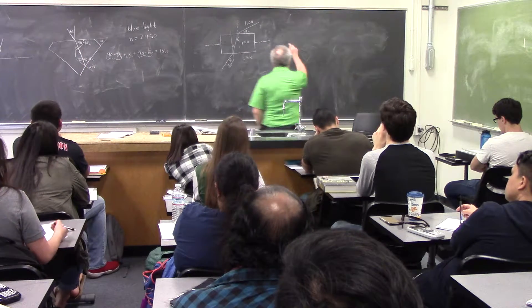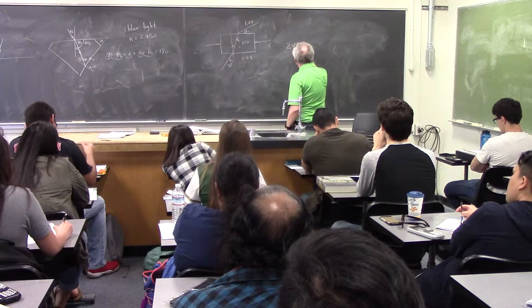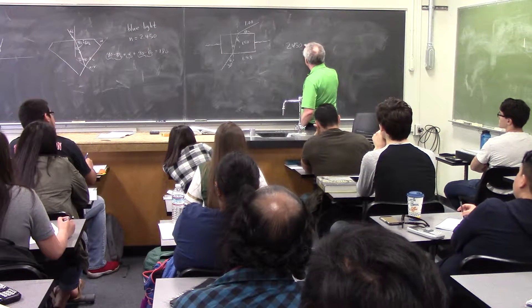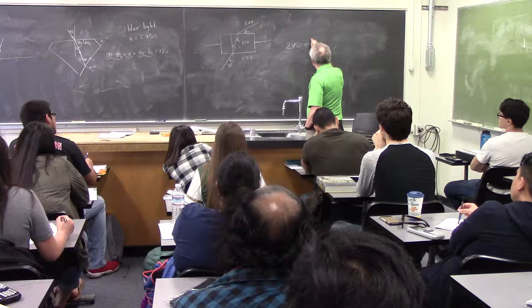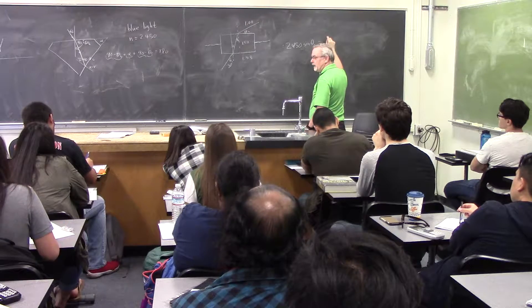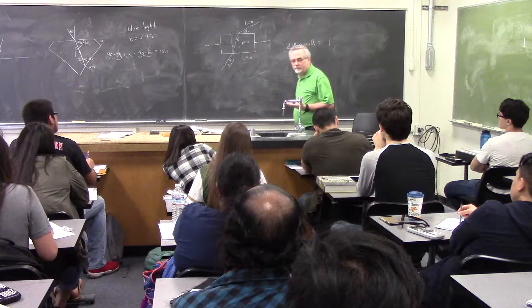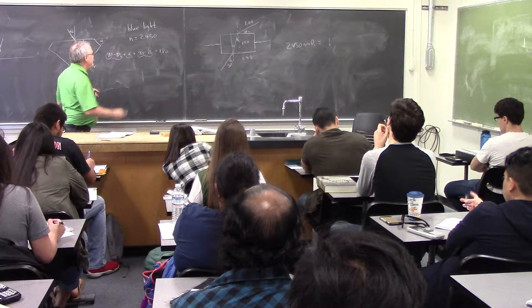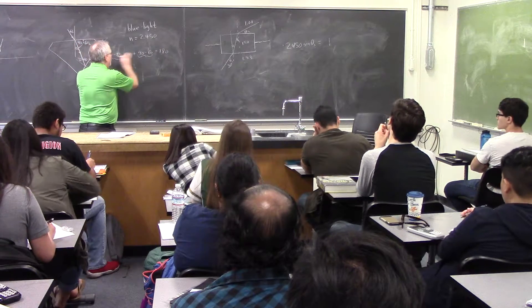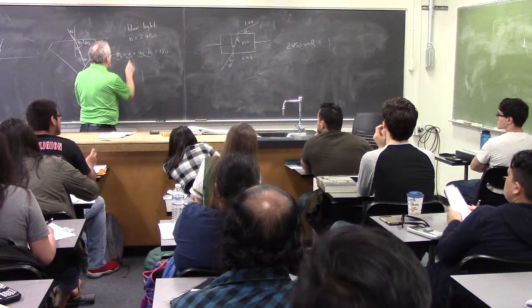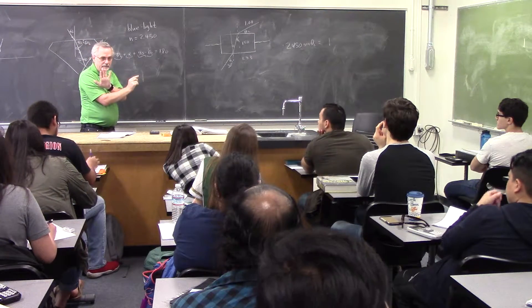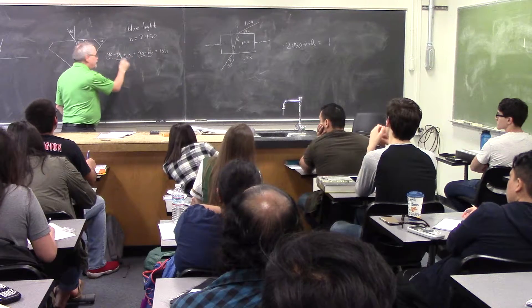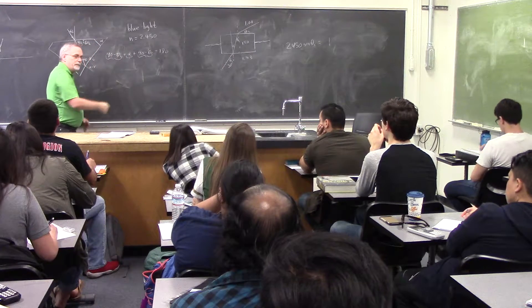If 2.450 is n going to air, I can find theta_C — it's just a matter of using your calculator. Once I find theta_C, that's the only unknown in the equation assuming I've chosen a particular alpha. Once I pick an alpha, that will tell me what theta_B is.